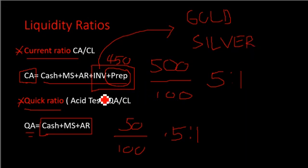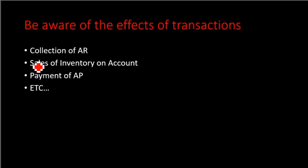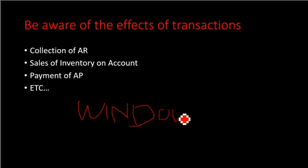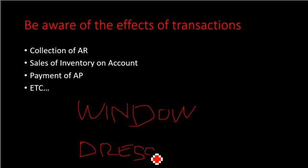You also have to be cautious about the effects of different transactions on your ratios. For example, consider: what is the effect of the collection of accounts receivable on the quick ratio or current ratio? What about sales of inventory on account, or payment of accounts payable? There is also the concept of window dressing to consider.